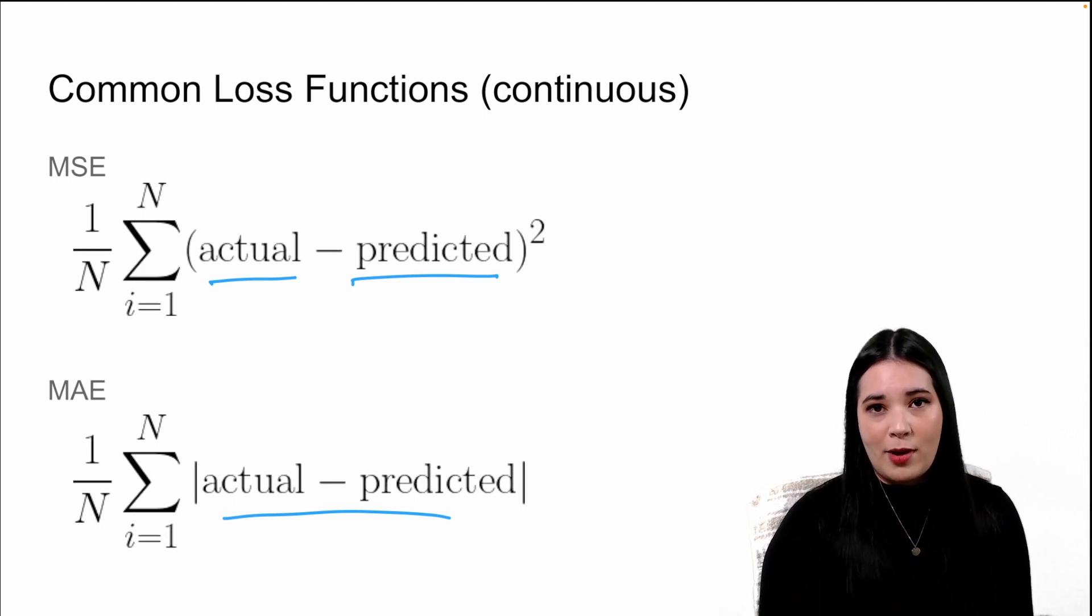You can think of mean squared error as the average squared difference between your model's guess and the actual value. The closer your model's guesses are to the actual value, the lower your mean squared error is going to be. You can also think of mean absolute error in these terms. Mean absolute error is the mean distance between your model's guess and the actual value.